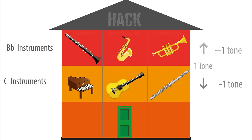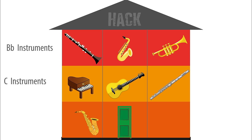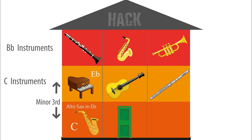Now let's add in an alto sax into the ground floor. This alto player is below the piano. When the alto player plays a C on his or her instrument, the piano plays an Eb — a minor third above, which is three semitones. That is why it is called an Eb alto saxophone. This alto sax is a minor third below the piano, and that is why it is located below the piano on the ground floor.